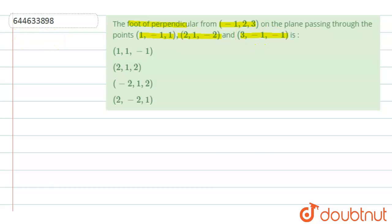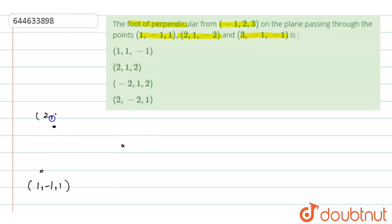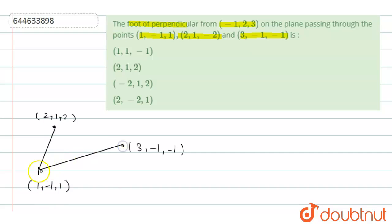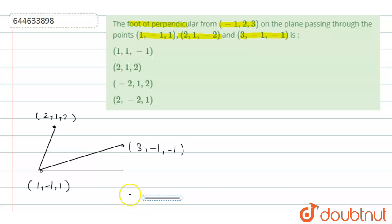First of all, let us label these points. Let point A be (1, -1, 1), point B be (2, 1, -2), and point C be (3, -1, -1). All three points lie in the same plane. Let us also take a general point (x, y, z) on this plane.